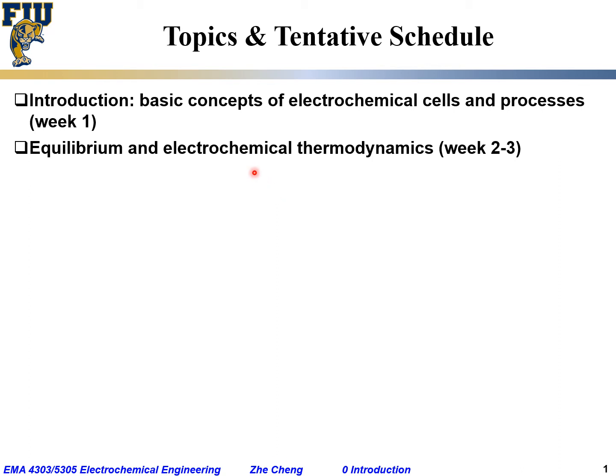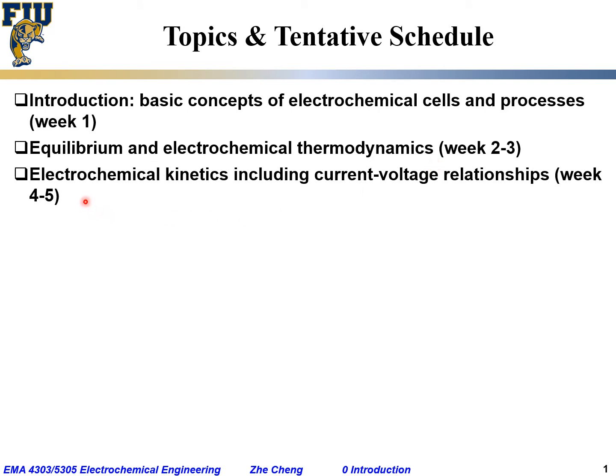In weeks two and three, we'll cover equilibrium and electrochemical thermodynamics. We'll introduce the concept of equilibrium and link electrochemical reactions with what you learned in your materials thermodynamics class. We'll establish a relationship between open circuit voltage, equilibrium potential, and cell potential versus enthalpy, entropy, and Gibbs free energy change — and how to convert between cell potential and Gibbs free energy change.